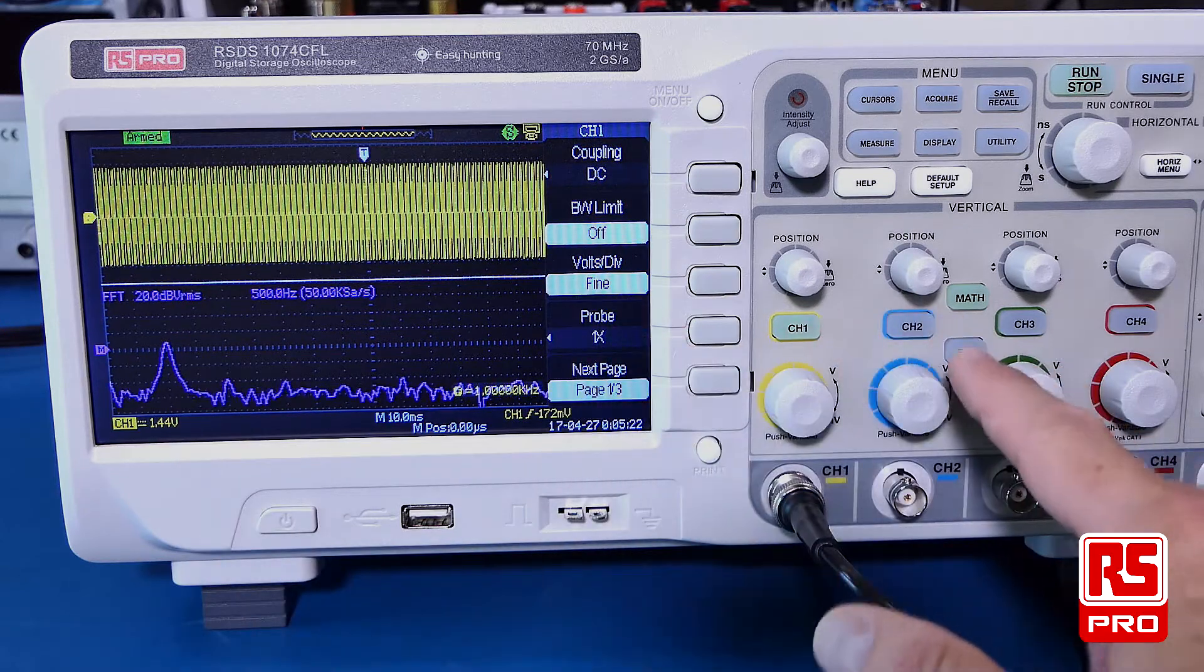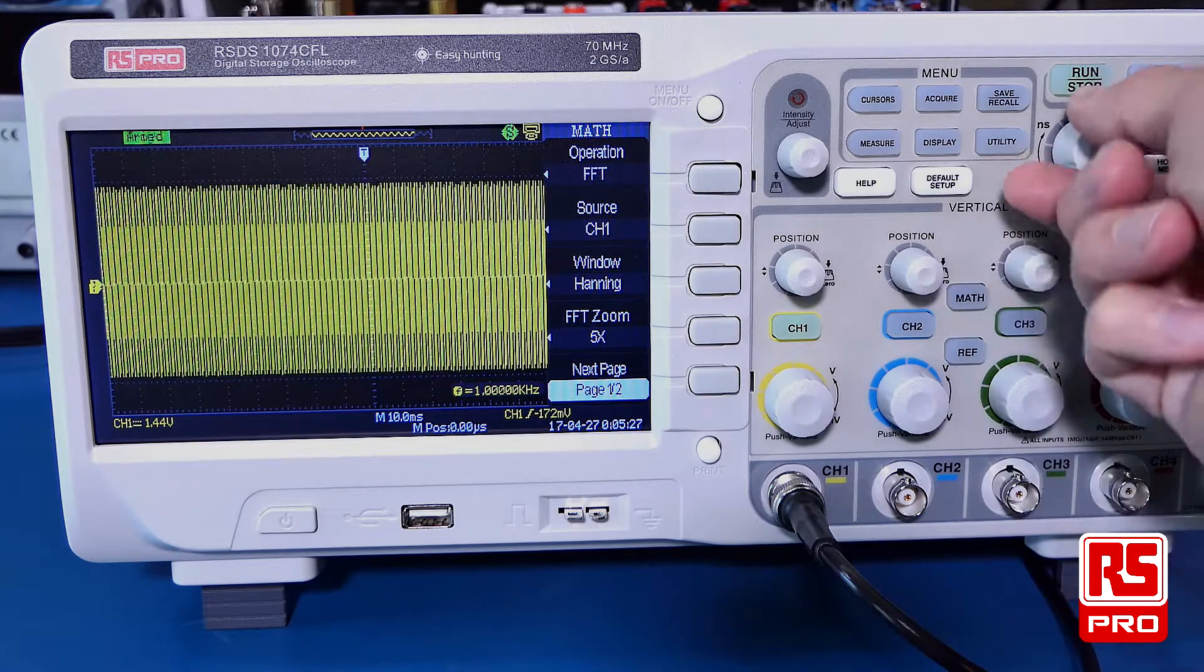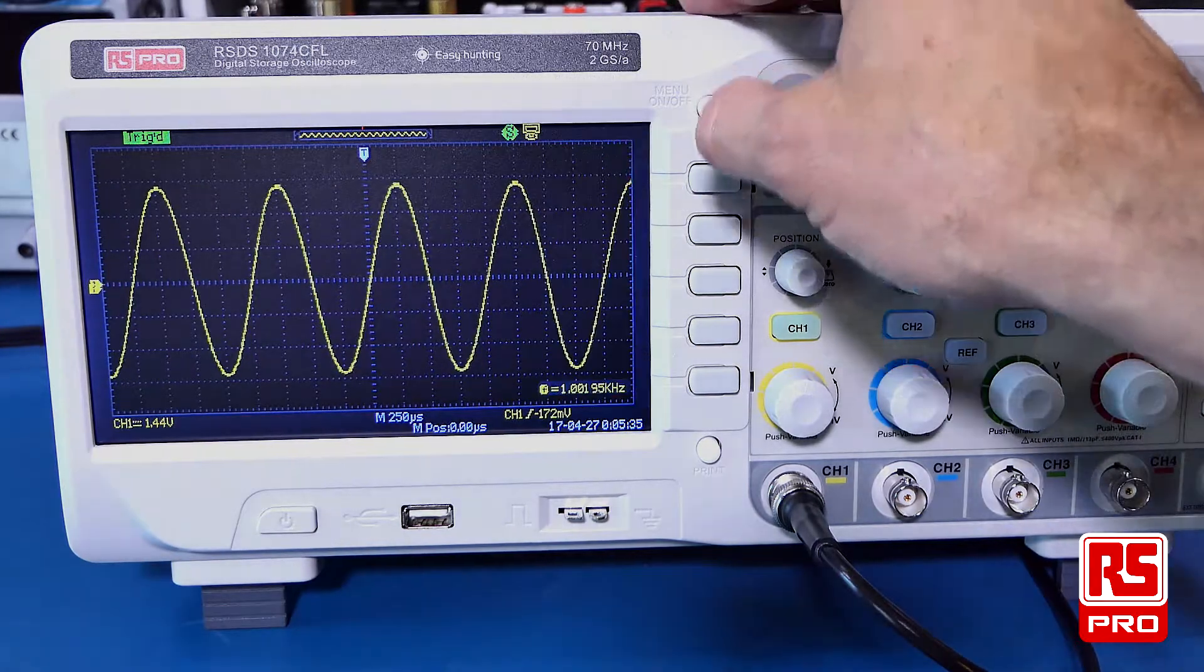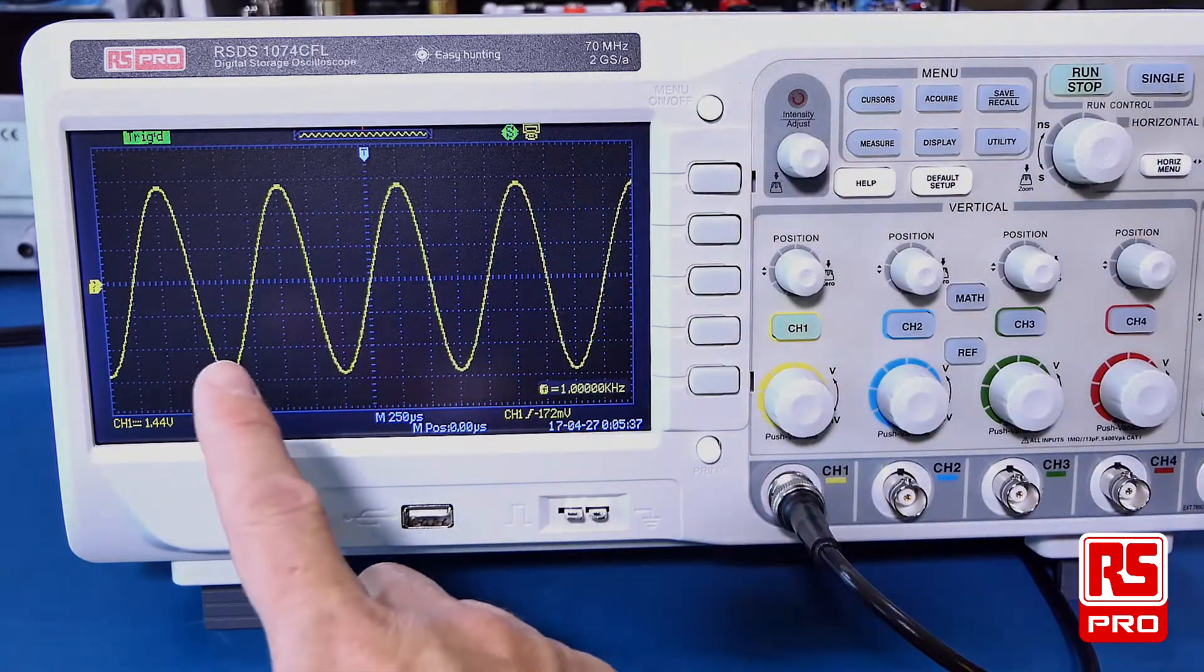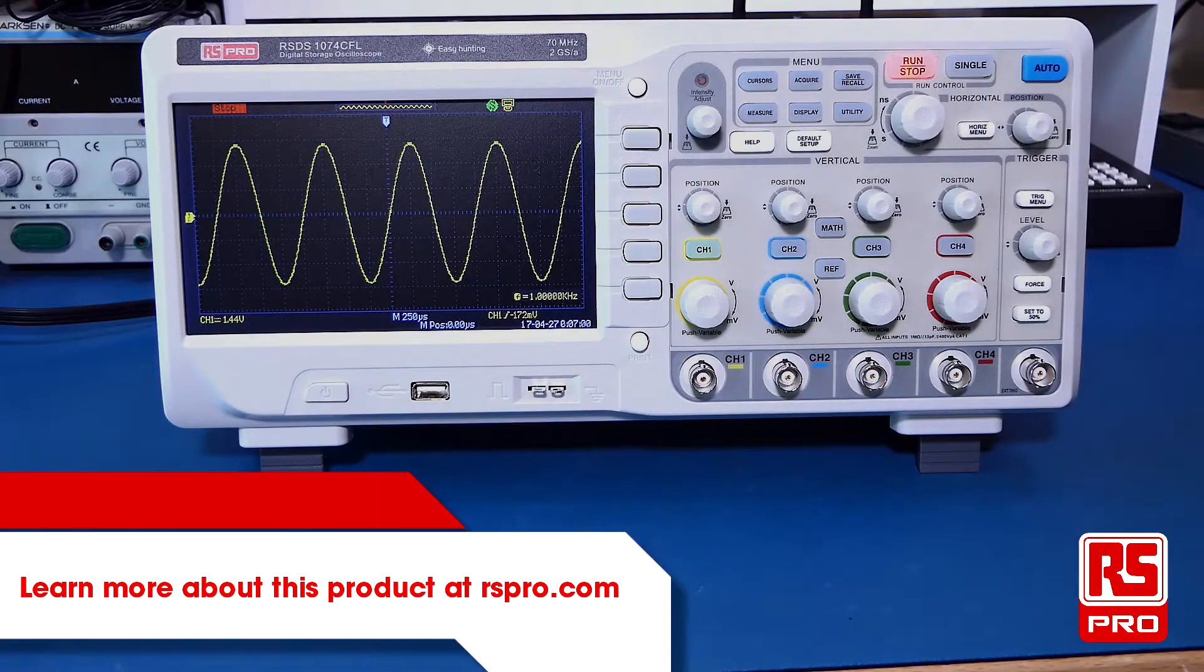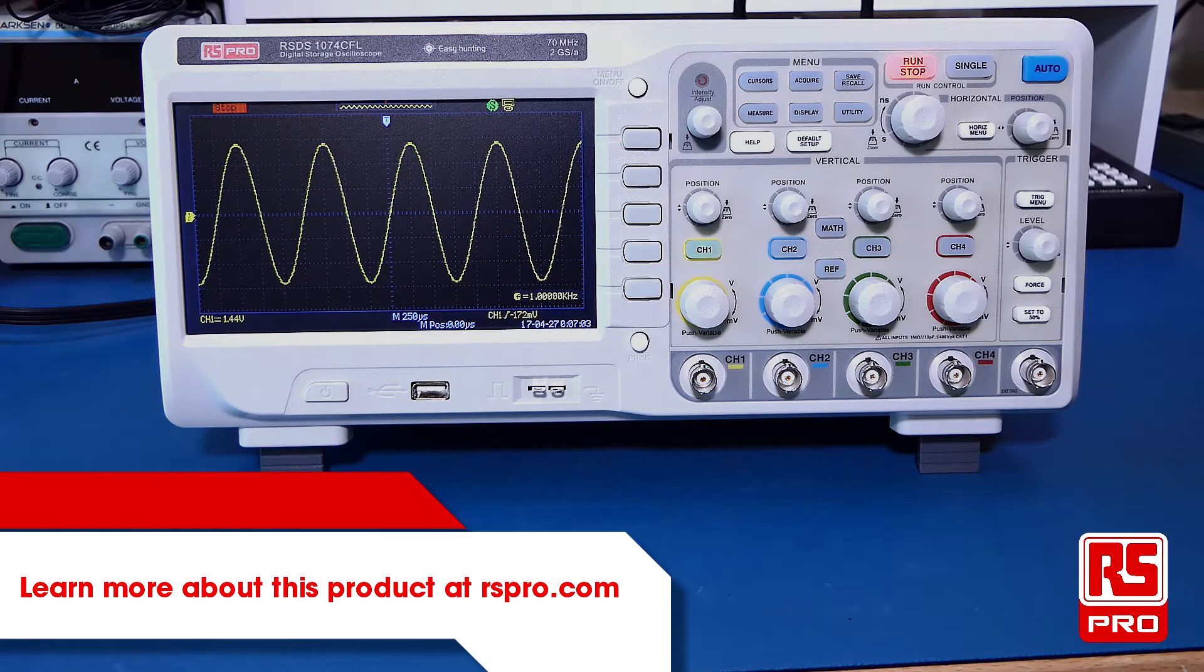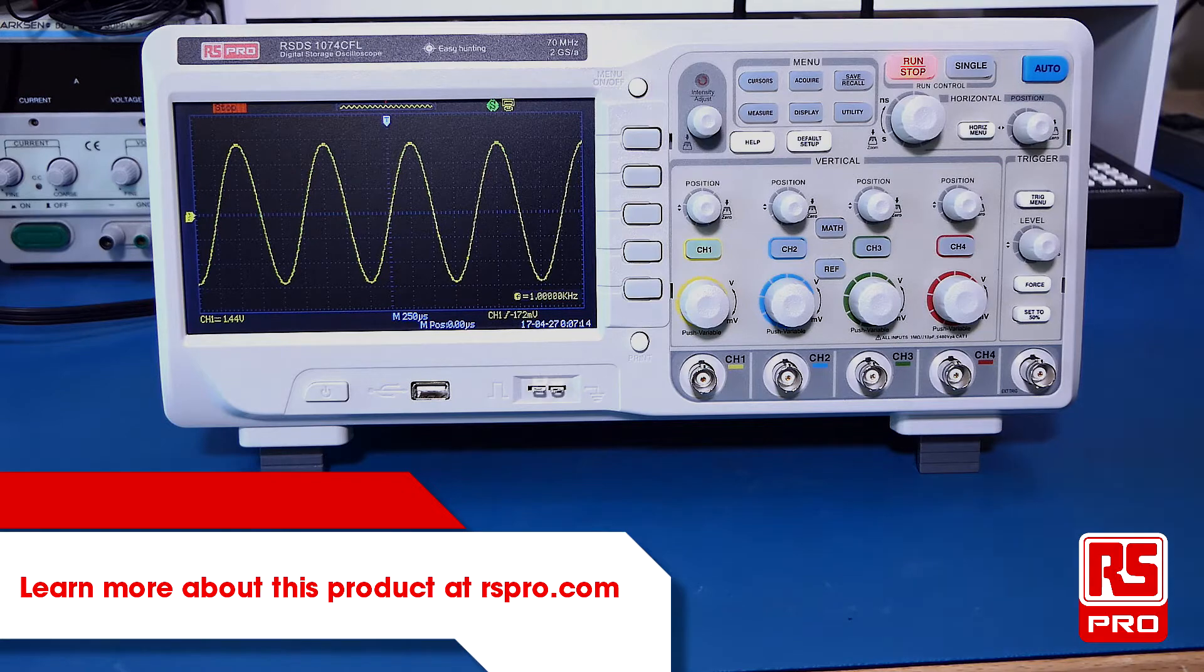To return to your normal signal, simply switch off the math function and this will allow you to return to your signal which is in the time domain. Thanks very much for watching this overview of the RS-PRO RSDS-1000 series oscilloscope. For more information on this product, please visit the RS-PRO.com website.